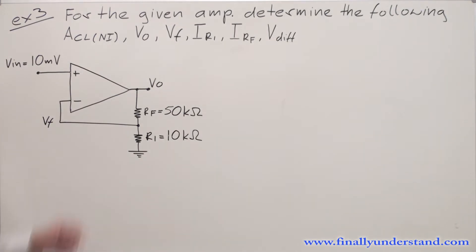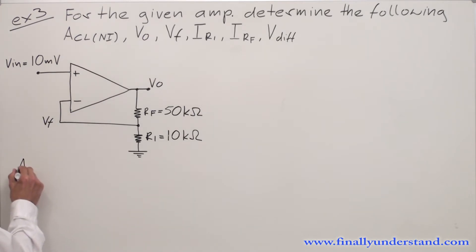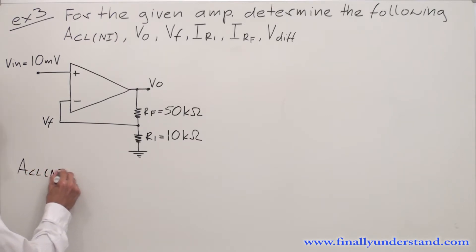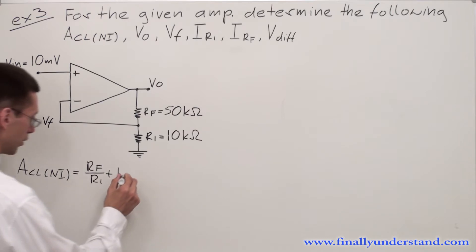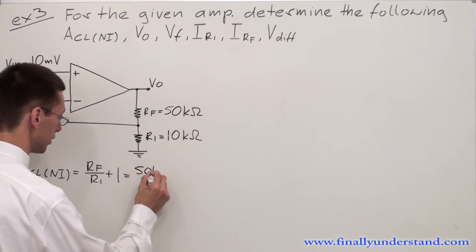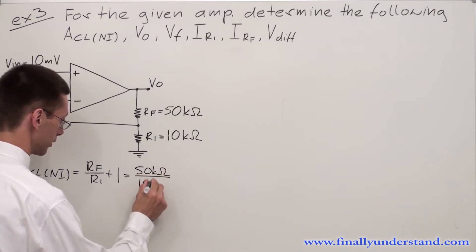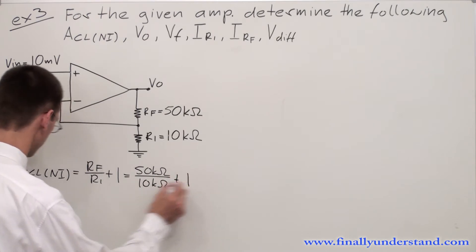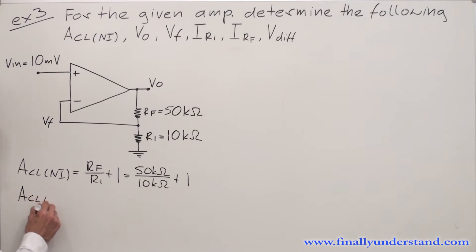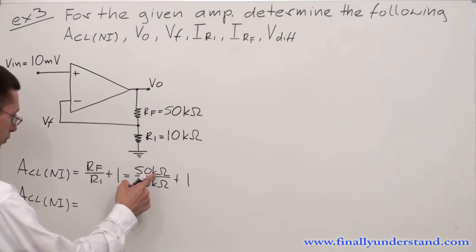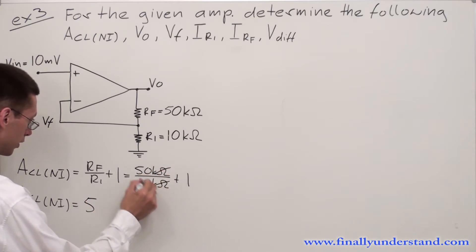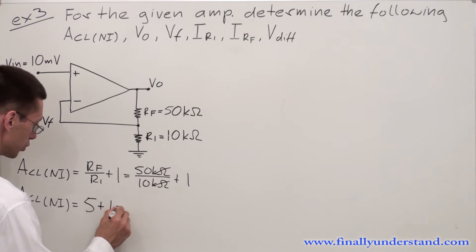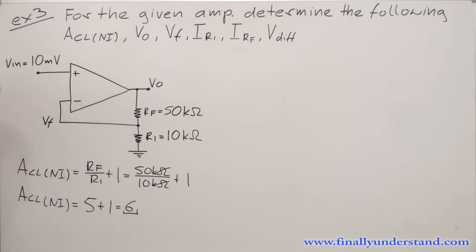I'm going to start from calculating voltage gain. The formula for the voltage gain says the closed-loop gain of the non-inverting amplifier is equal to RF over R1 plus 1, where RF is equal to 50 kilo ohms over 10 kilo ohms plus 1. So ACL is equal to 50 kilo ohms divided by 10 kilo ohms — kilo and kilo cancel out — 50 divided by 10 is 5, plus 1, which equals 6. My voltage gain is equal to 6.